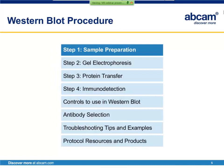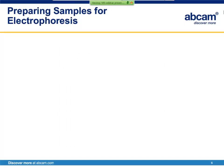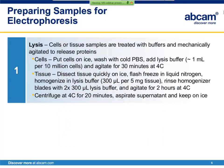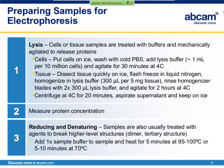The first step to a great Western blot is preparing your sample correctly, because the final result will never be of better quality than the starting material. There are three main steps to preparing your sample: lysis, measurement of protein concentration, and reduction and denaturation.